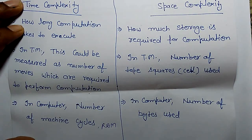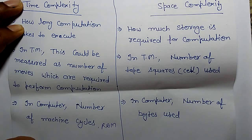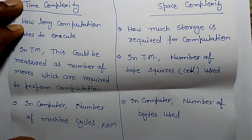In a computer, space complexity is the number of bytes used. When we run a program in RAM, it may require 1MB, 2MB, 100MB, or some amount in KB for a particular algorithm — that is space complexity.